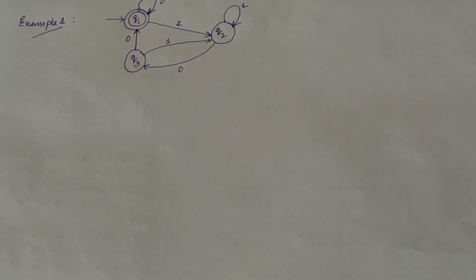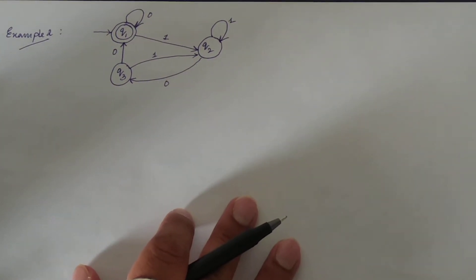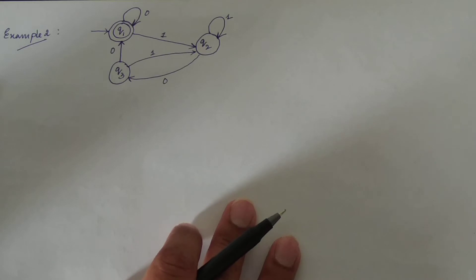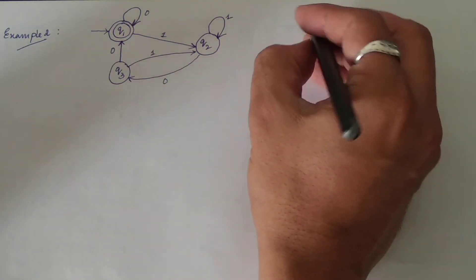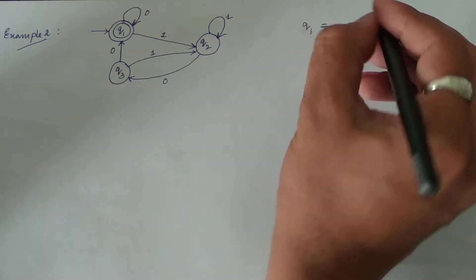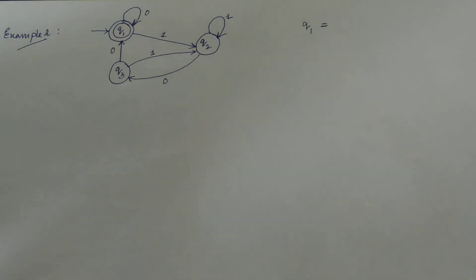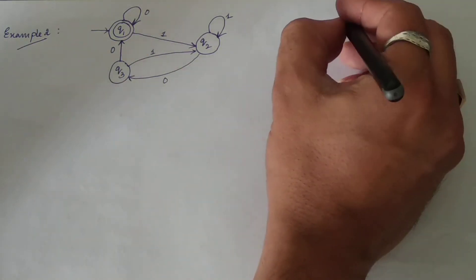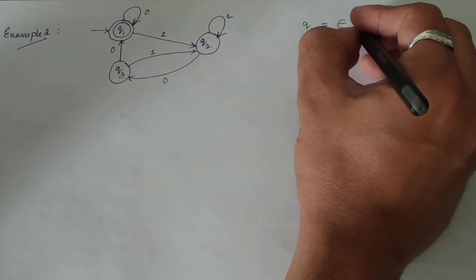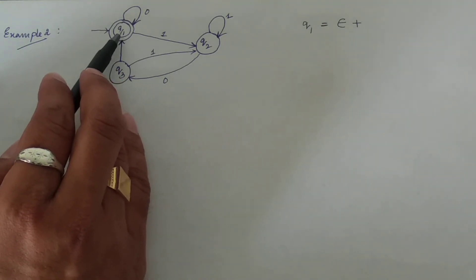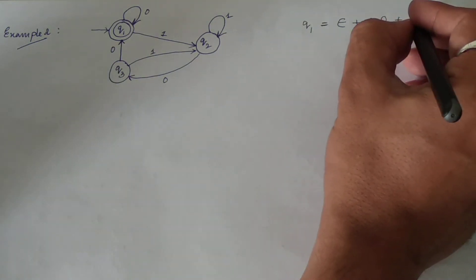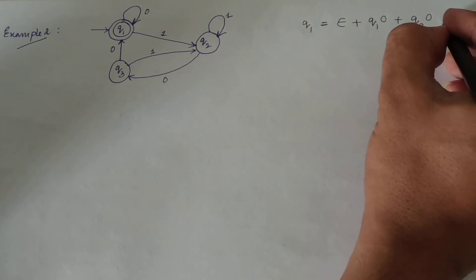Let us check the process. We already understand the initial steps, so I will find the equations for all states from this particular diagram. Since we have three states, we will have three equations. The first equation is for the initial state q1. We check incoming edges — the initial state has an incoming epsilon edge, plus one more incoming edge: zero from q1 to q1 itself, giving q1·0. There is also an incoming edge from q3, giving q3·0. This is equation number one.